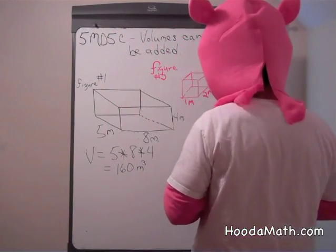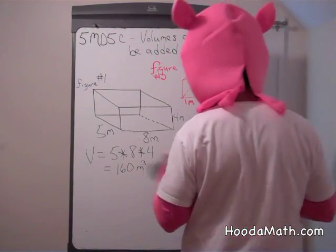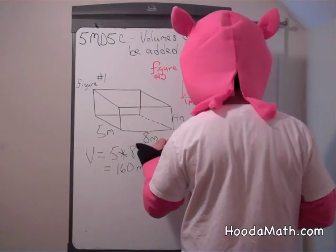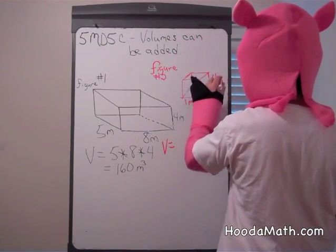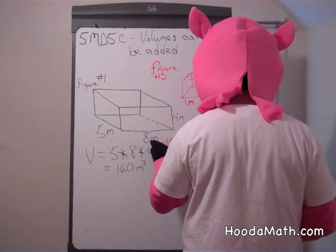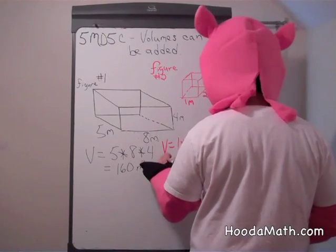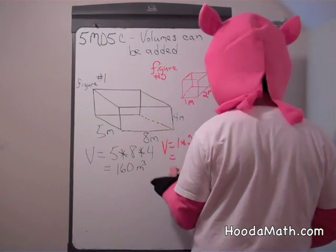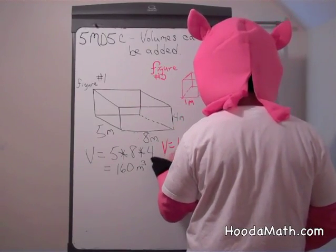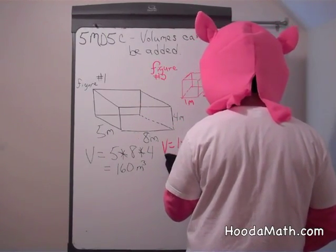Smaller tank, the volume is found the same way. One meter by two meter by four meter. And the volume of the smaller tank is eight cubic meters.